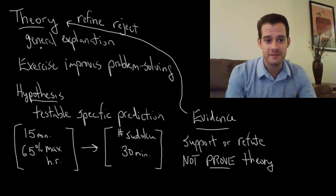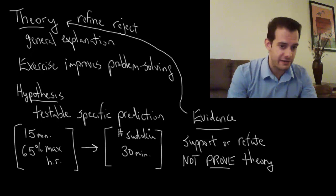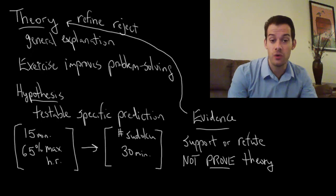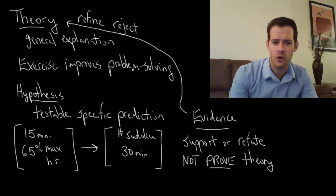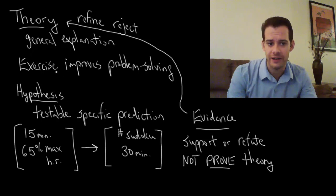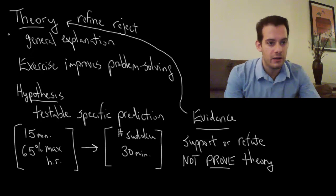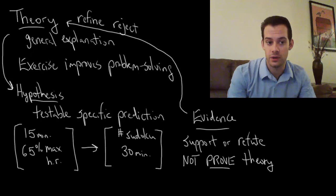So I take my evidence back to my theory and I see if I can refine it. So I might run some different tests with different types of exercise and different types of problem solving. And then I might see can I refine this. Maybe it's only aerobic exercise that has this effect. Or maybe this effect only occurs with certain types of problem solving. And then I can refine my theory to be more specific. And as I refine the theory, that's going to allow me to generate new hypotheses. More specific predictions about how things will occur.